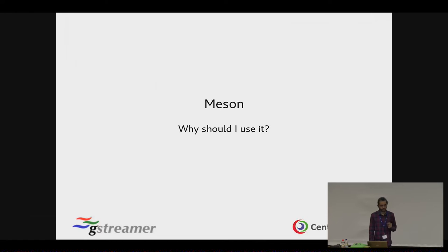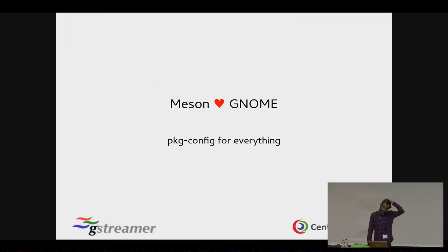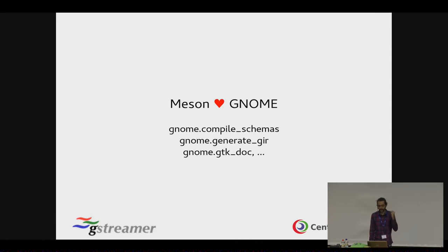Why should you use it? Meson is made for GNOME. Meson uses PKG config for all external dependencies — that's the standard. The PKG config file gives you the headers, the library paths, what libraries to link to when shared or static. And the most important part beyond that for GNOME is that it already has all the infrastructure: a GNOME module from which you can compile schemas, generate GIR, GDK doc, whatever else you want to do — everything is there.